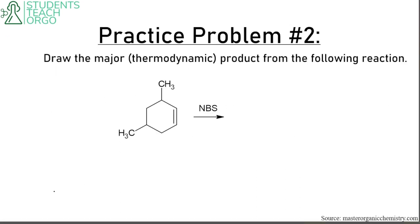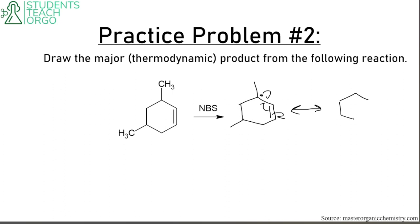Let's go through a practice problem. The first thing you want to do is form the most stable radical. We have two allylic positions — one here and one here. It's going to be the top one because it is more substituted, making it more stable. We draw the resonance structure, moving the radical and the double bond over to the most stable position. Finally, we add our bromine to get the final answer.